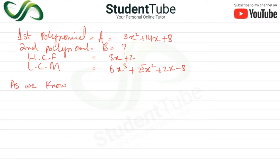LCM is 6x³ + 25x² + 2x − 8. As we know, the formula is: A × B = LCM × HCF.